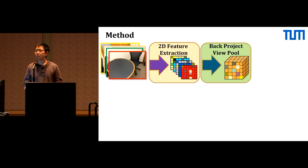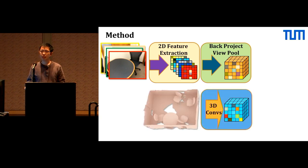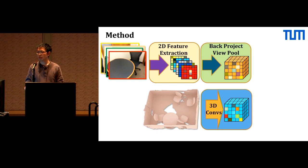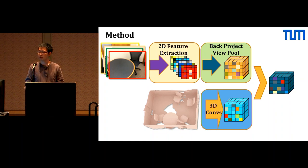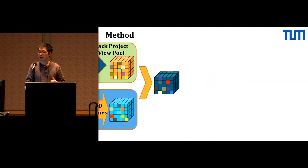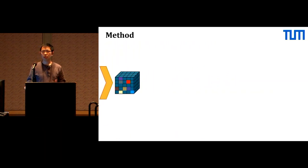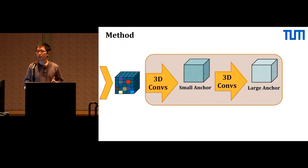At the same time, we run a series of 3D ResNet blocks on the geometric input. Finally, we concatenate both color and geometry features in 3D. This joint feature serves as a backbone for a 3D regional proposal network.